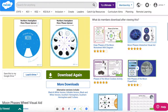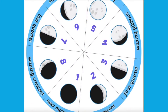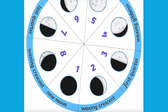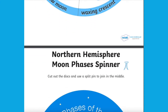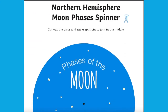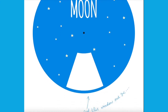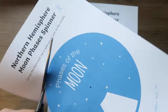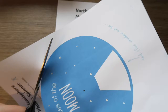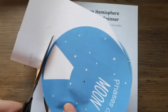The Moon Phase Wheel visual aid resource contains a PDF with two sheets which can be printed onto A4 paper. The first of these sheets is a wheel which contains the various phases of the moon that can be observed throughout the month, including the new moon, waxing crescent, first quarter, and so on.